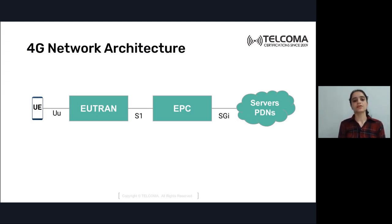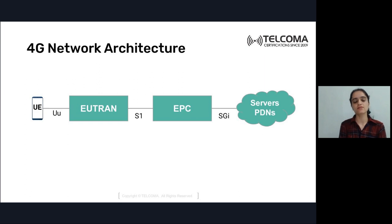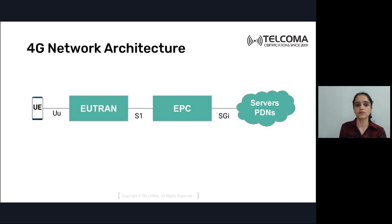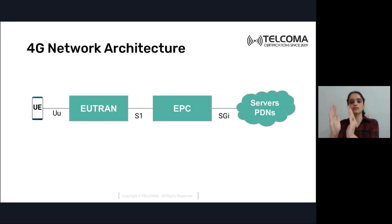In the 4G network architecture, the UE is connected to E-UTRAN via the UU interface. E-UTRAN is then connected to the evolved packet core via the S1 interface. The evolved packet core is connected to external service PDNs via the SGi interface.